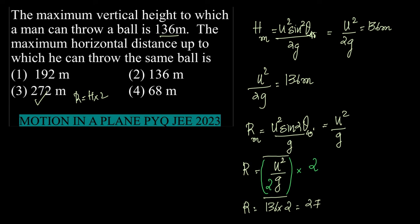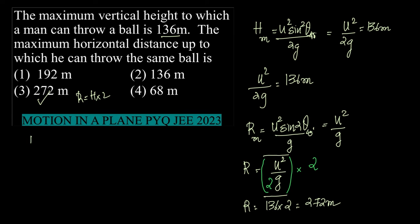Now if you go formula-wise directly, what we get is: H_max / R_max is actually (u²/2g) / (u²/g), which gives you u²/2g times g/u².